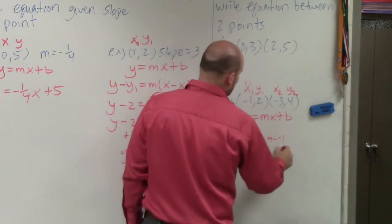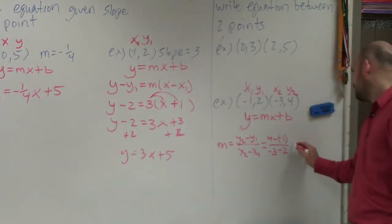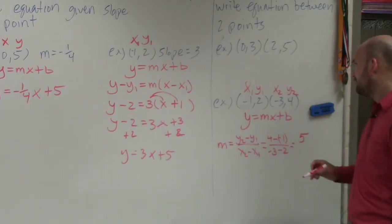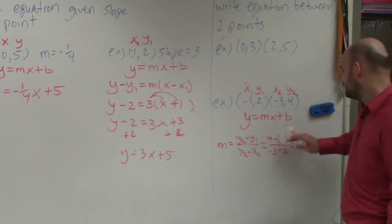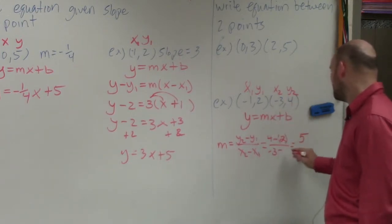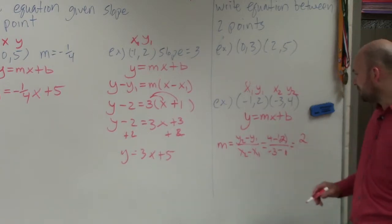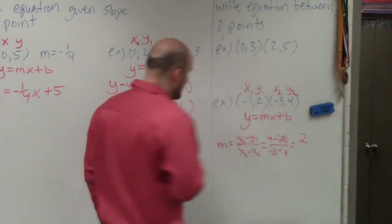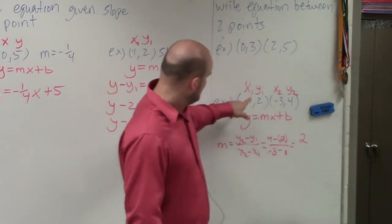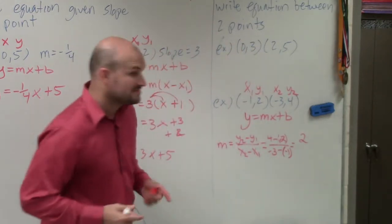Go ahead and do this. You have 4 minus a negative 1 over negative 3 minus 2. Did I switch those up? Thank you. Sorry. 4 minus 2, and that's negative 3 minus a negative 1. Right? So 4 minus 2 is 2. Negative 3 minus a negative 1, that becomes a negative 2.